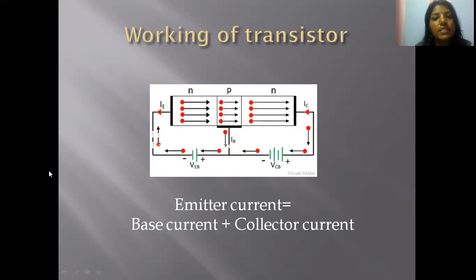However, the base is very thin and lightly doped, so only a small number of electrons recombine with holes. Most electrons from the N-region emitter pass through the base and reach the collector region. Due to recombination, one electron flows from the base terminal to the positive terminal of the VEB battery, which produces the base current.